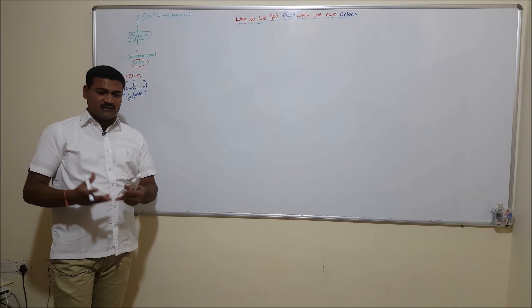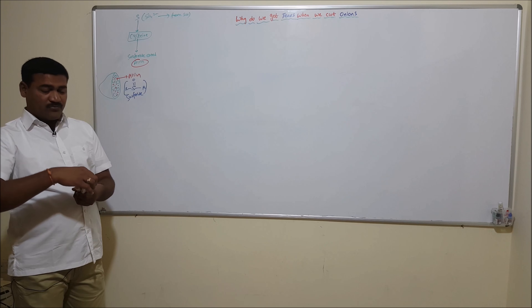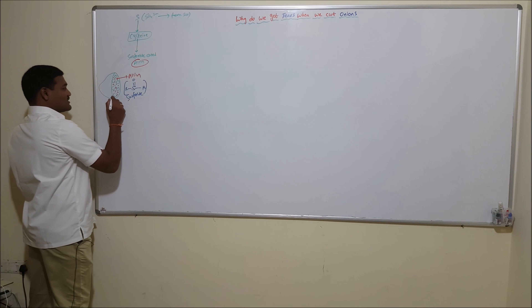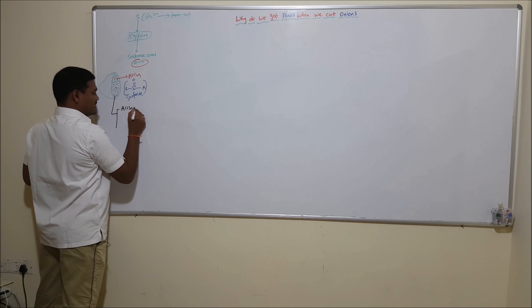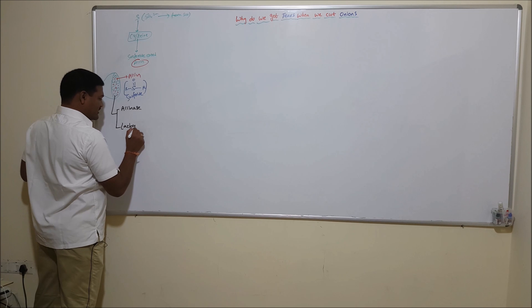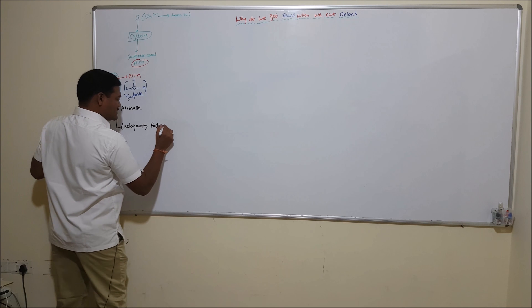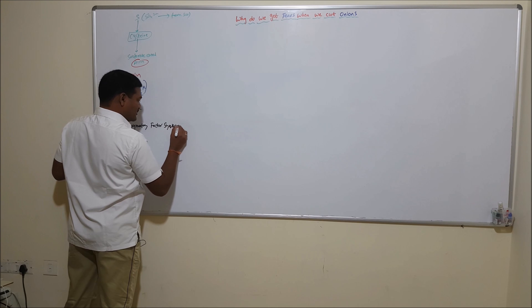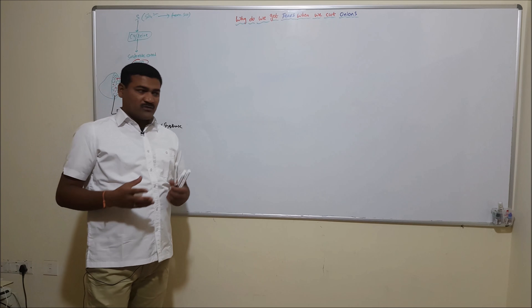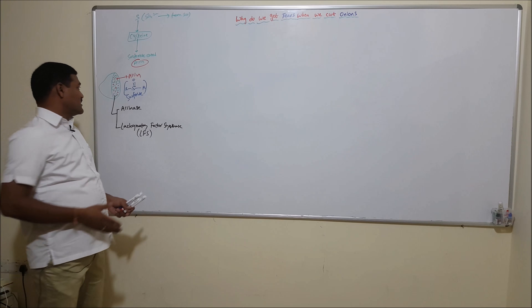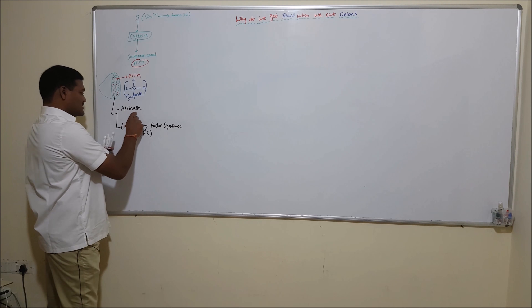LM is a sulfoxide — an organic compound with a sulfenyl functional group, where sulfur is bound to two carbons. When you cut the onion, this LM compound is exposed to air, and the cells also get cut. When onion cells are cut, two important enzymes leak out of the cells: alliinase and lacrimatory factor synthase.